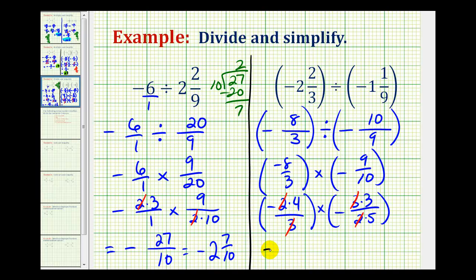So now we can multiply, and negative times a negative is positive. The numerator would be four times three, which is 12, and the denominator would be five.